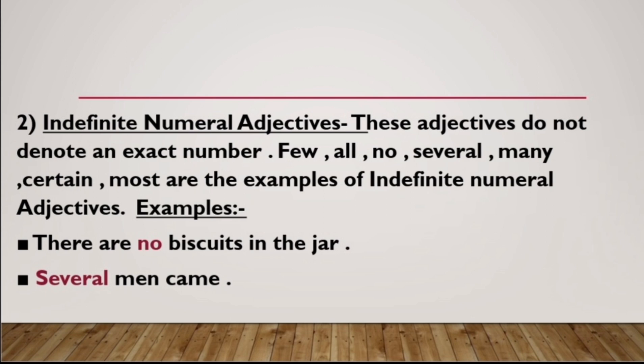Have a look at these examples. 'There are no biscuits in the jar' — it talks about an indefinite amount of biscuits. The next example: 'Several men came.' How many men? Several — it generally means a lot, but we do not know the exact number. That is what an indefinite numeral adjective is all about.